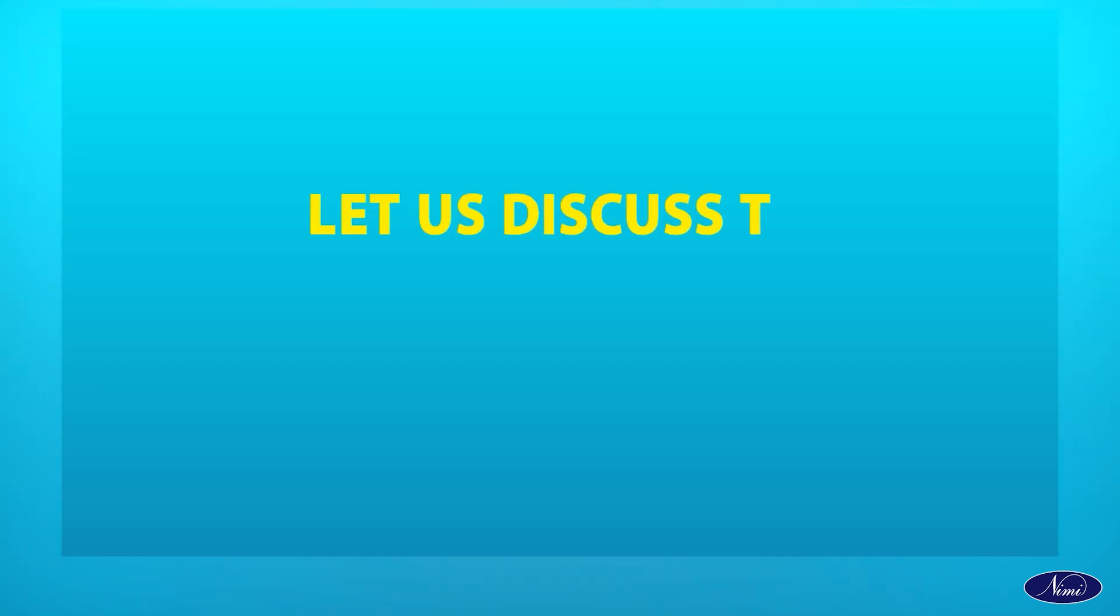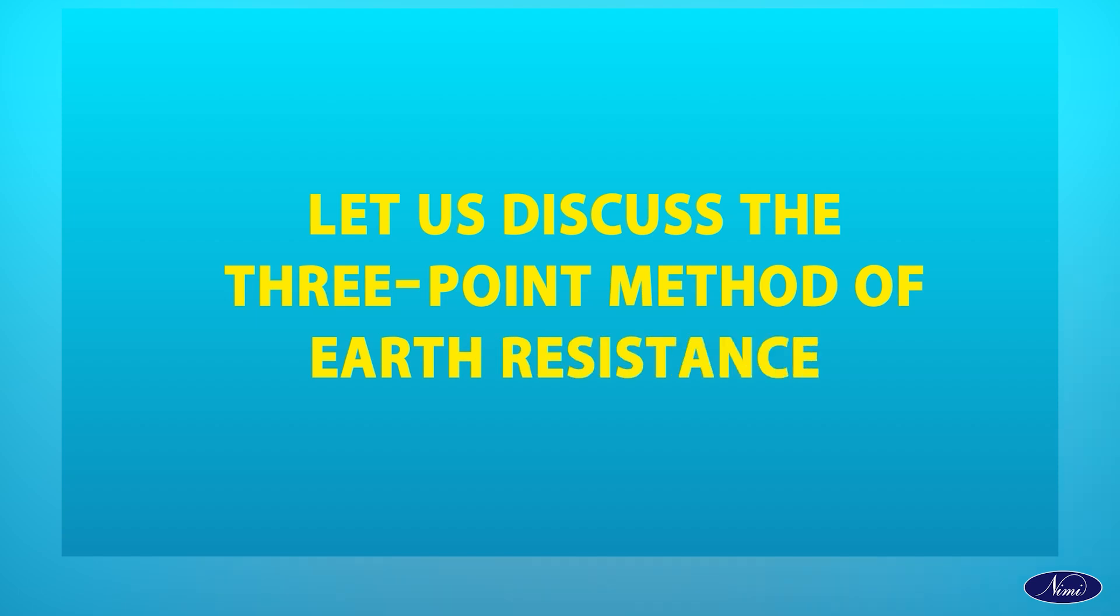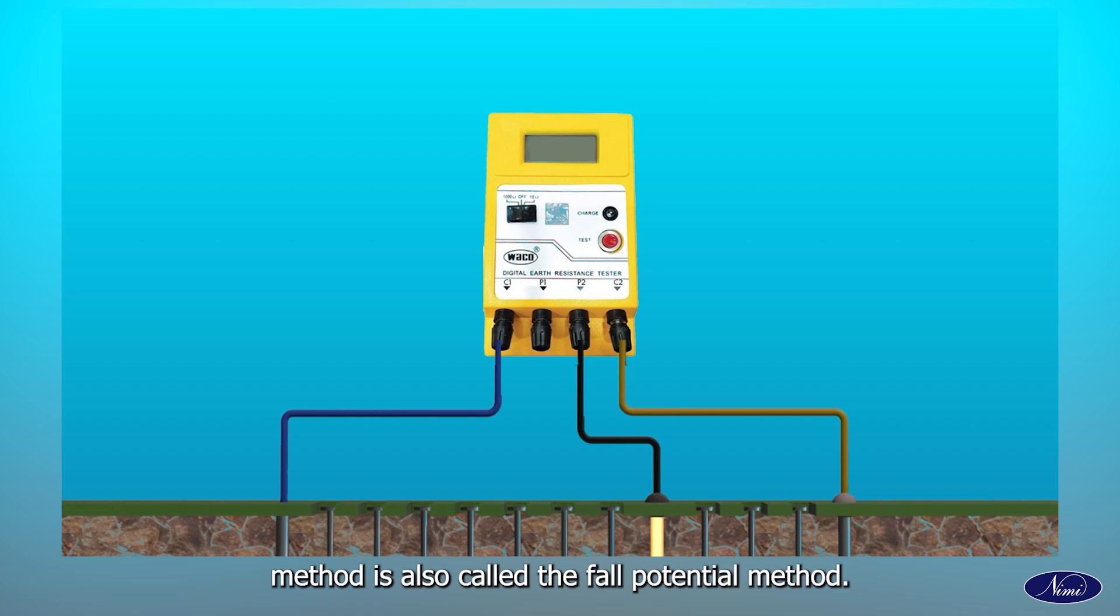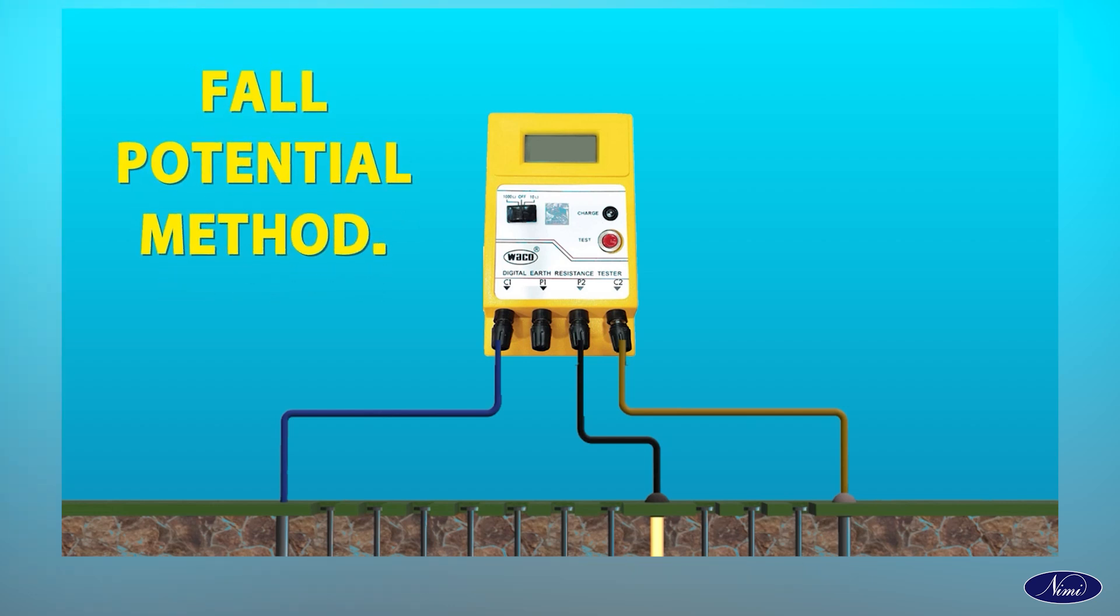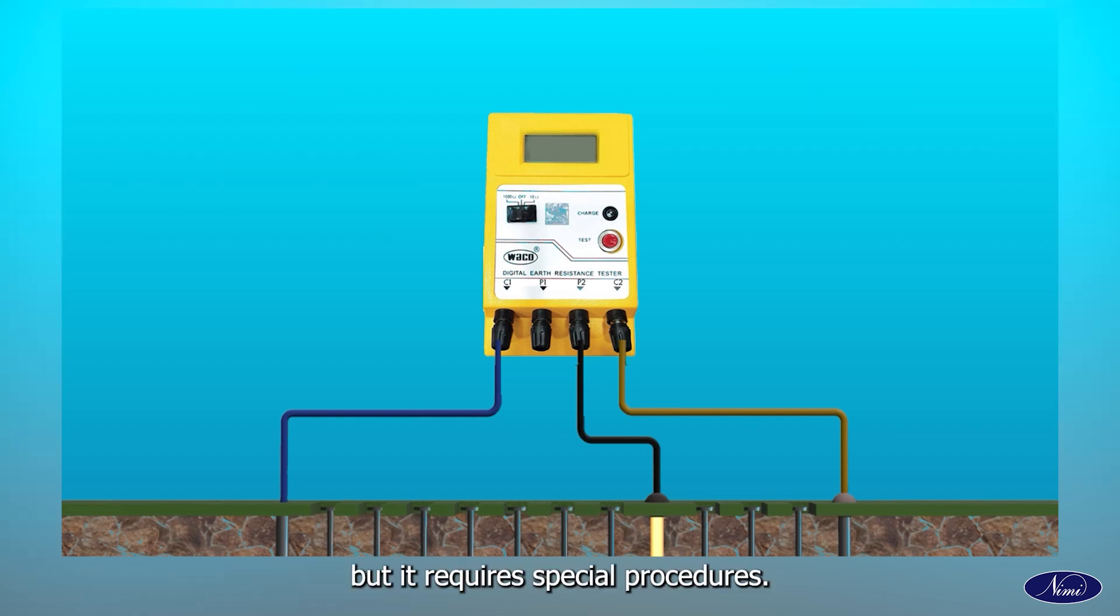Let us discuss the three-point method of earth resistance. The three-point method is also called the fall potential method. The three-point method or fall potential method is the most common way to measure earth resistance, but it requires special procedures when used to measure large electrode systems.